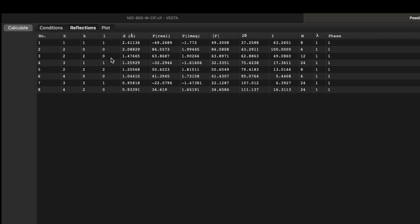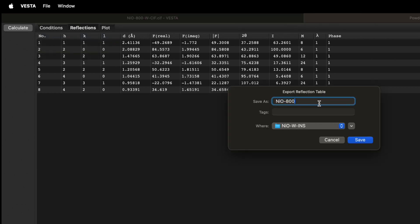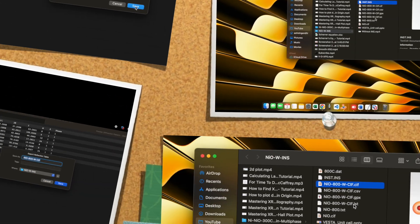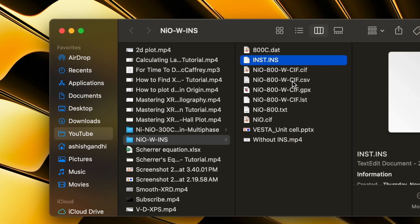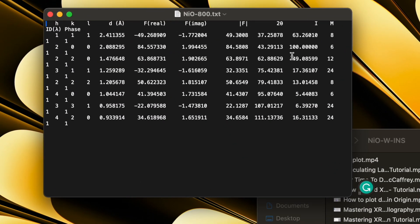If you need this table, you can go and click on file, export reflection table, and click over here. Save it to your desired folder. Over here you can find the table with the complete list of 2θ values.